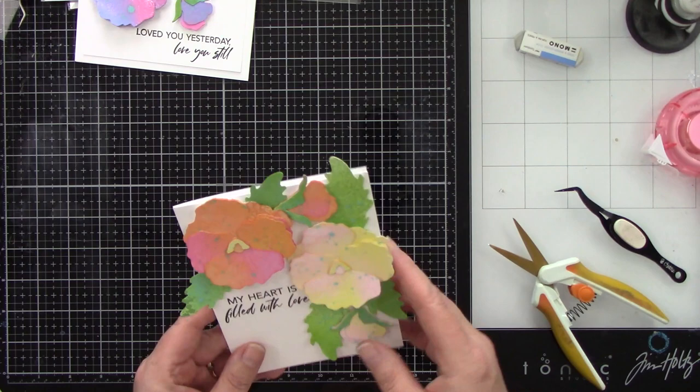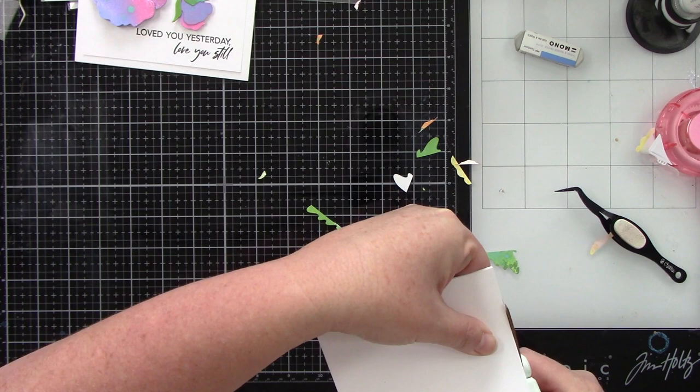I'm adhering that to the card base. I decided to not do a background mat on that smaller one. I liked the white on white. Now that I have that adhered to the card base, I can trim the excess off.